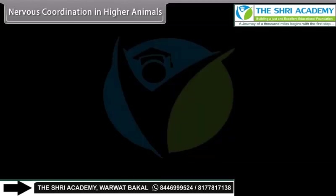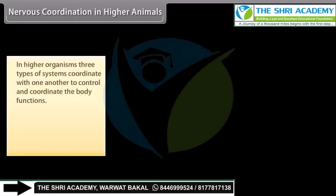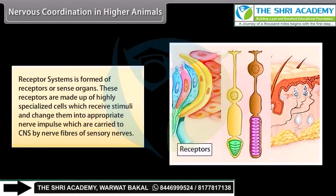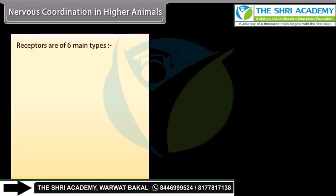In higher organisms, three types of systems coordinate with one another to control and coordinate the body functions. They are the receptor system, nervous system, and effector system. The receptor system is formed of receptors or sense organs, made up of highly specialized cells which receive stimuli and change them into appropriate nerve impulses, which are carried to the CNS by nerve fibers of sensory nerves. Receptors are of six main types.